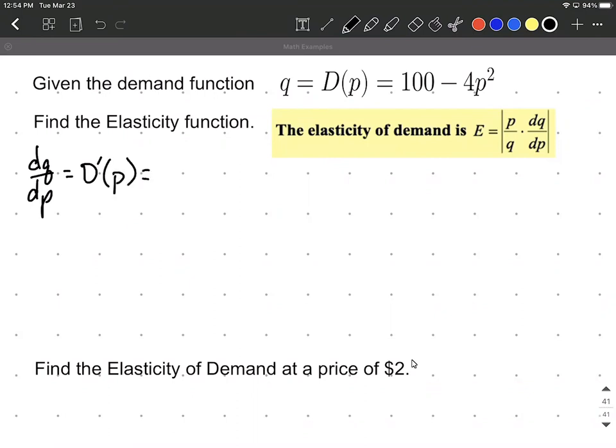So to calculate that, we'll use the power rule. The derivative of our constant, the 100, is going to be 0. And then the second term there, we have minus 4. We'll bring the exponent down, the 2, and multiply it by the negative 4. So negative 8, p to the reduce the exponent by 1, so p to the first power.